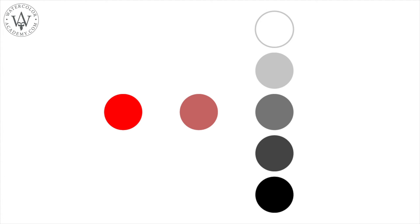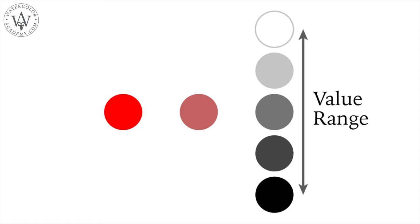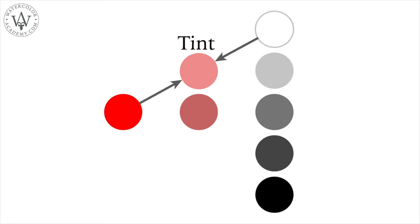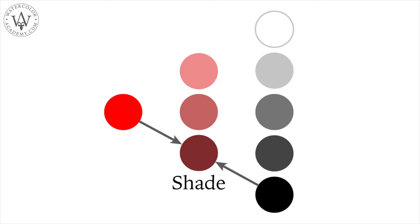All gray colors from white to black create a value range. When a pure color is mixed with white, it becomes lighter — such a light color is called a tint. When a pure color is mixed with black, it becomes darker and muted down — such a color is called a shade.